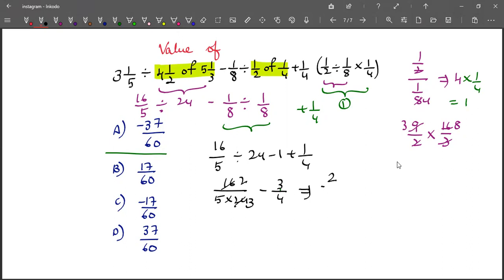Then we need to solve for 2 by 15 minus 3 by 4. So LCM is 60. This gives us 8 and 45. So 8 minus 45 gives us negative 37 over 60.